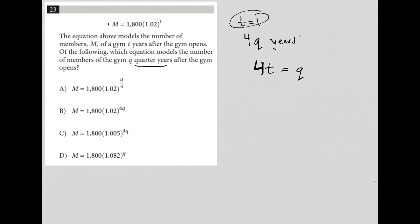For instance, again, if T is one, replace that with one, then we know that Q has to be four. Why? Because in one calendar year, there are four quarter years. So hopefully that makes sense.